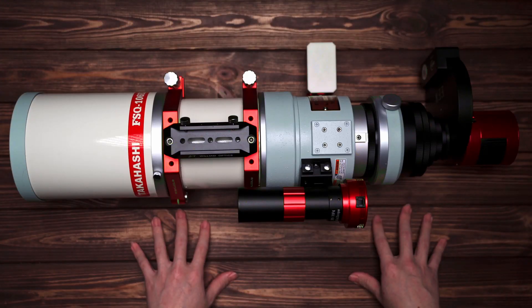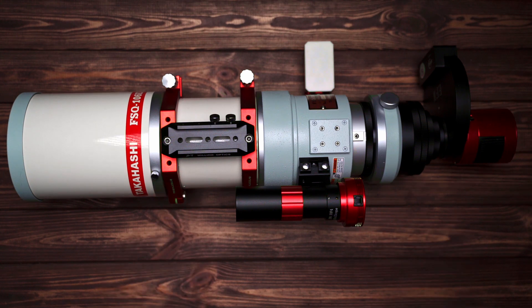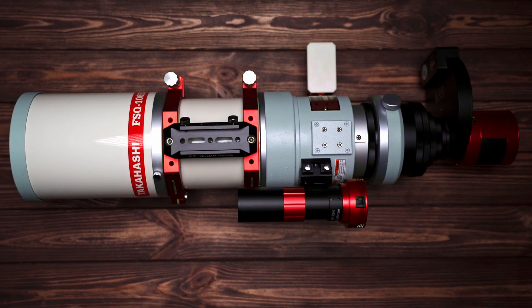Then it's the vixen type dovetail plate on the bottom of this telescope for me to put it on the equatorial mount. You can find many options of color and length online.